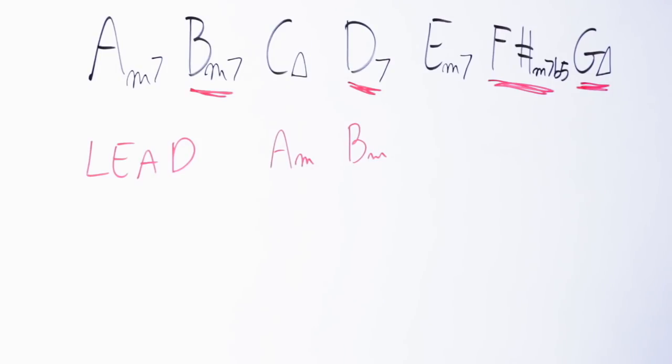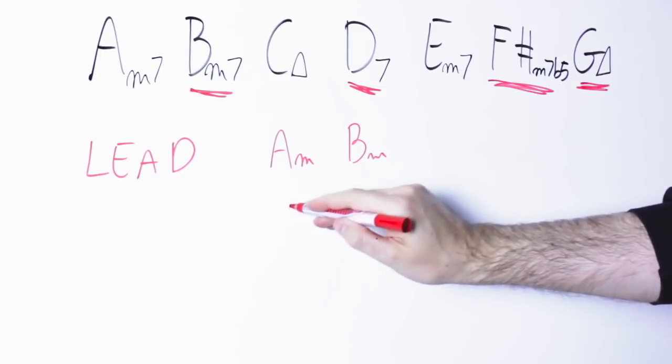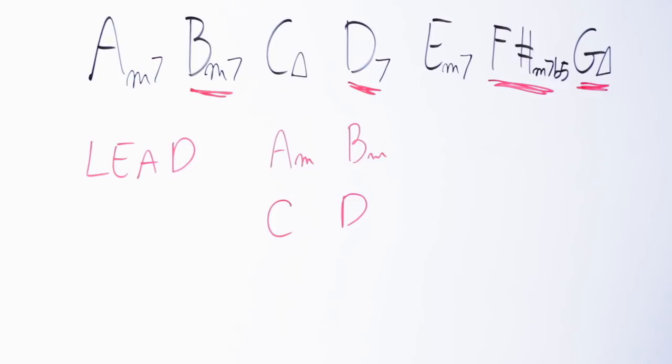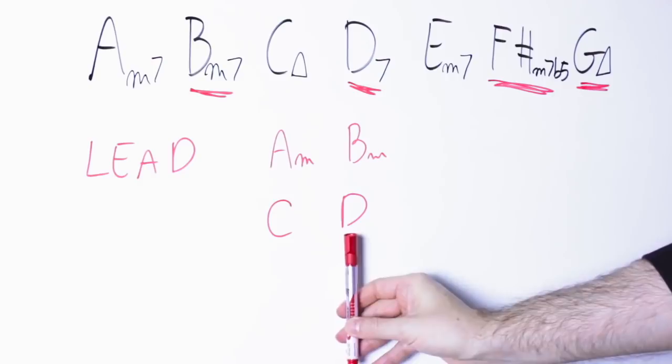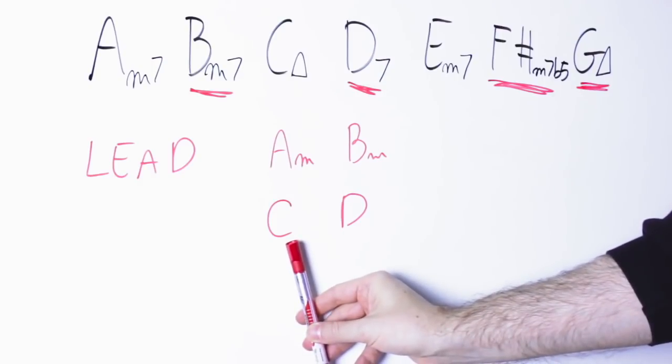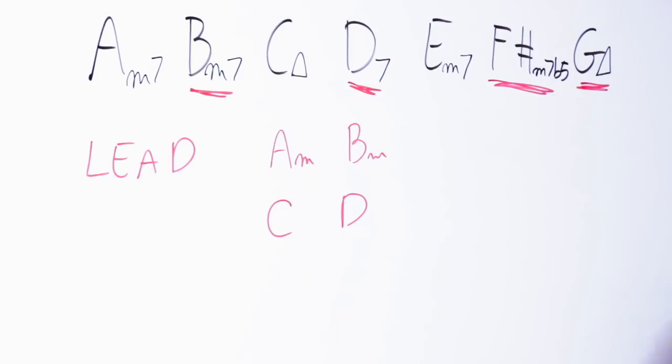Another way to break the Dorian scale down for soloing is to use the C major C E G and the D major D F sharp A arpeggios. And those are but two ways of the thousands and thousands of ways you have to play the Dorian mode.